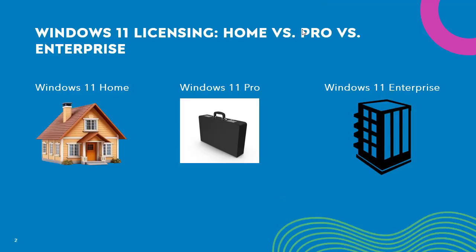Windows 11 comes in three primary editions: Home, Pro, and Enterprise. Each is designed for a specific type of user, from personal use to professional and enterprise environments. Windows 11 Home is specifically designed for the home user, Windows 11 Pro helps professionals in the corporate sector, and Windows 11 Enterprise is for large corporate networks with many PCs and workstations.